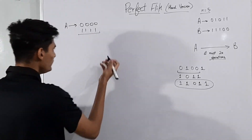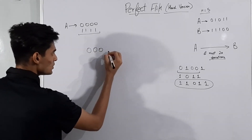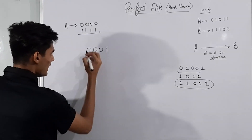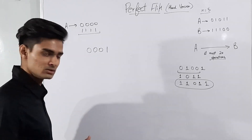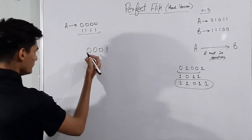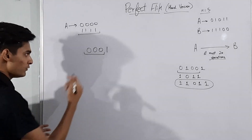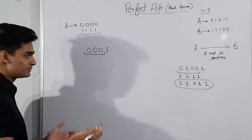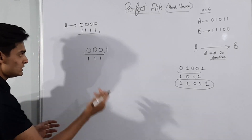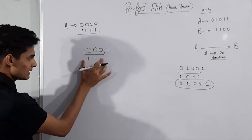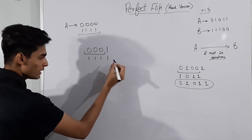For example, if we had the string '0001' and we had to convert it to a string of all 1s, we would take the prefix of length 3, invert the bits to get '111', and since reversing '111' leaves it unchanged, the complete string becomes '1111'.